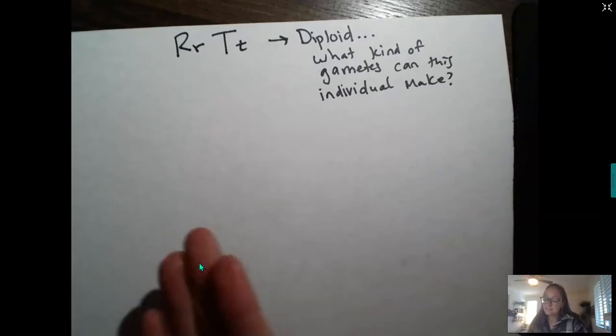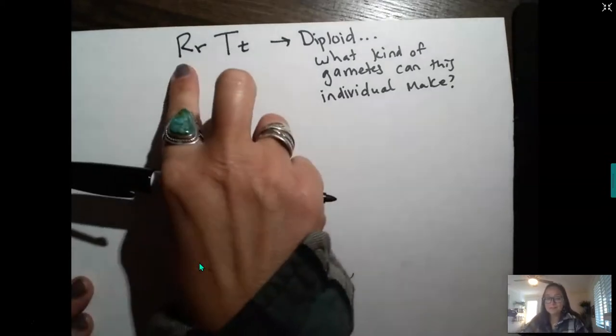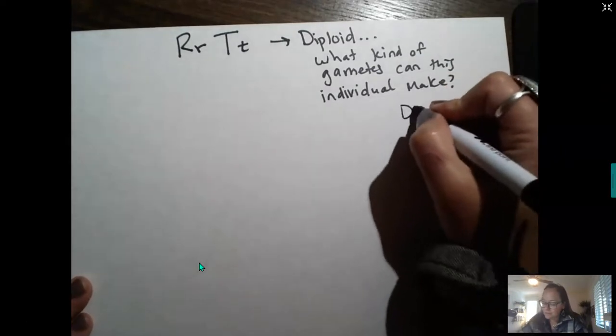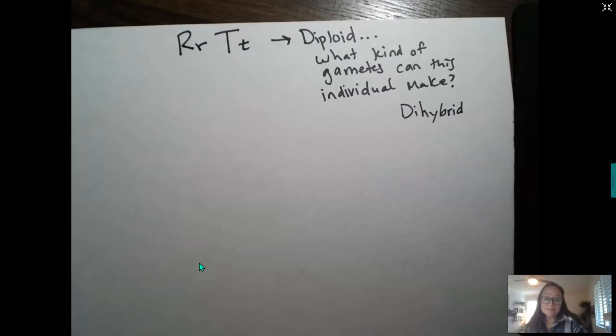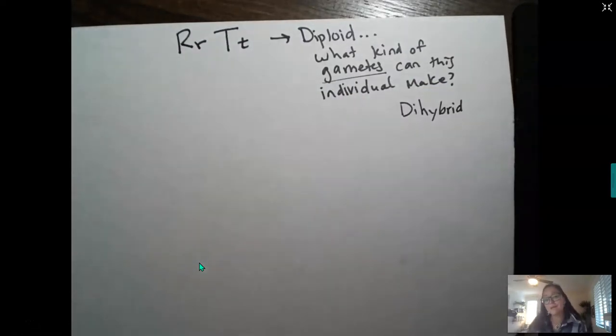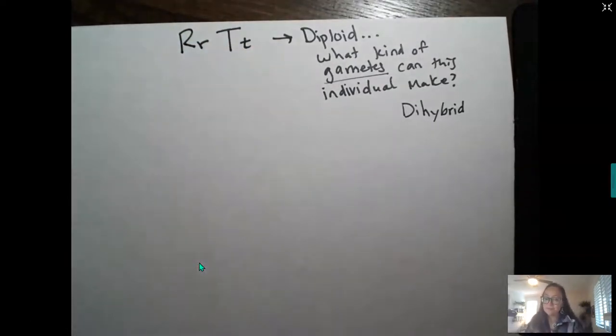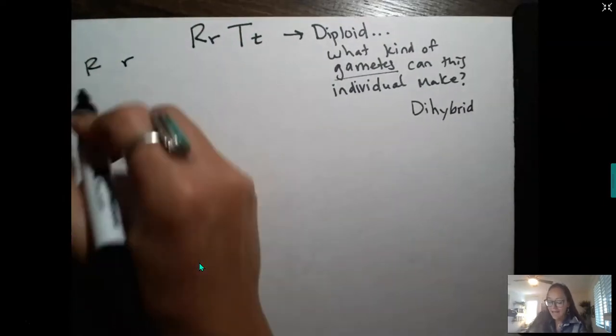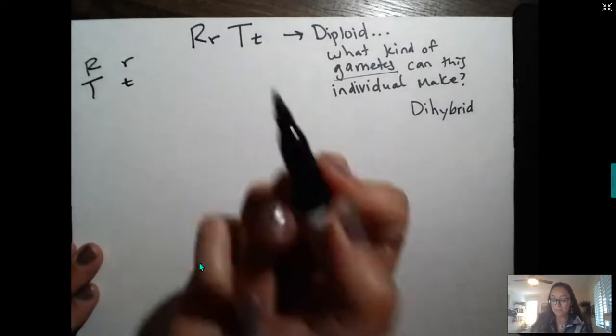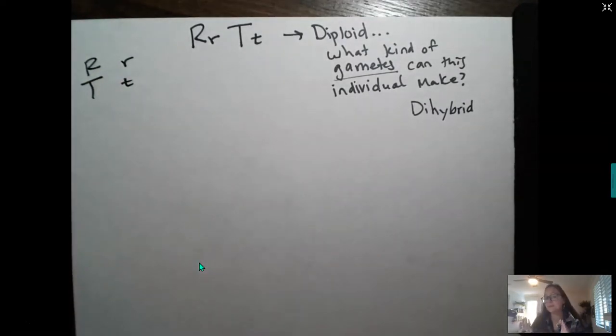But here we can see that this diploid organism is heterozygous for both traits. So we actually call this individual a dihybrid, a hybrid for two traits. But we are diploid organisms, so when this individual goes to make gametes, what kind of gametes are possible? Here Mendel's law states that the alleles are going to separate. So in each gamete there will only be one R and there will be one T in each gamete. They're going to separate, Mendel's law of segregation.